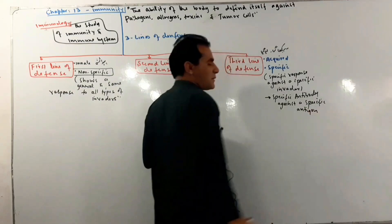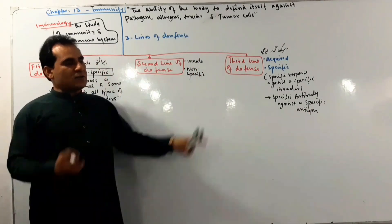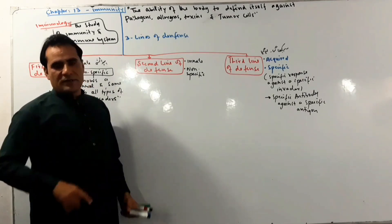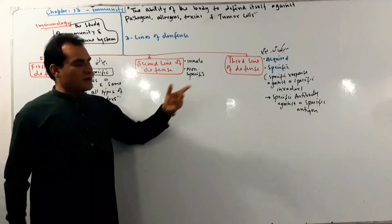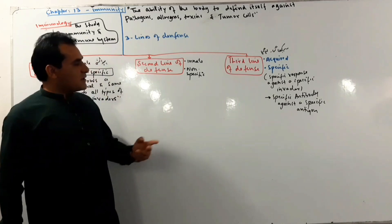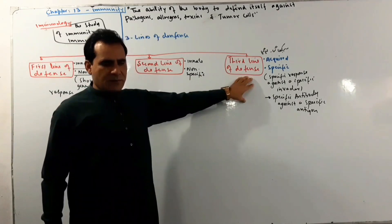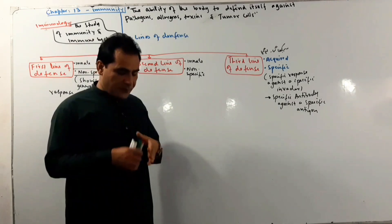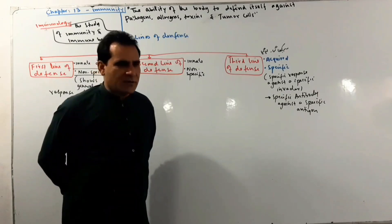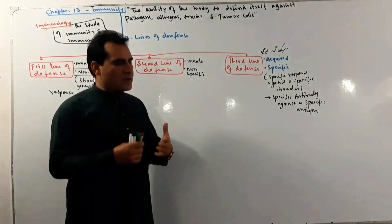Regarding antigen and antibody: the immune system involves white blood cells, and the key components include antigens and antibodies. The immune system is not only white blood cells, but white blood cells are a very important component of the immune system.